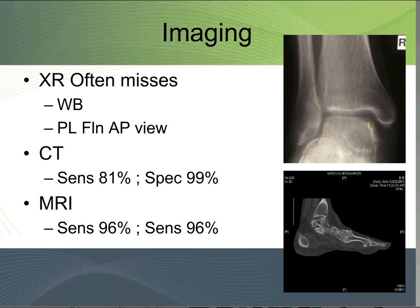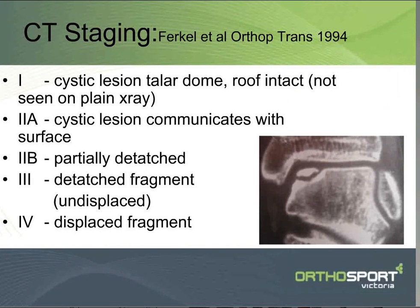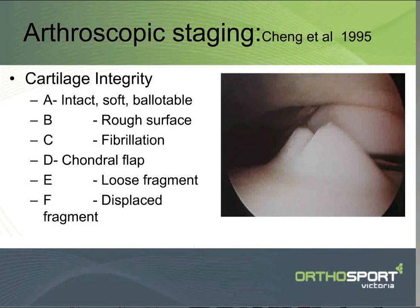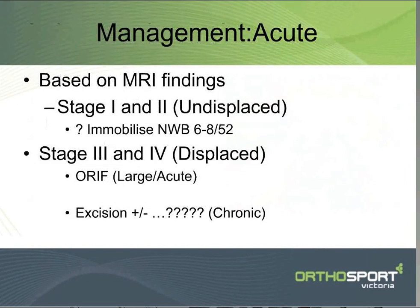CTs are very specific — if there's a hole, there's a hole. But sometimes you miss more subtle lesions, and MRI scans are probably the gold standard for diagnosing this. There are lots of classification systems. The CT one is pretty good, the MRI one is also pretty good, and there's an arthroscopic one that you're not going to routinely use in theatre. These are really research-based things.